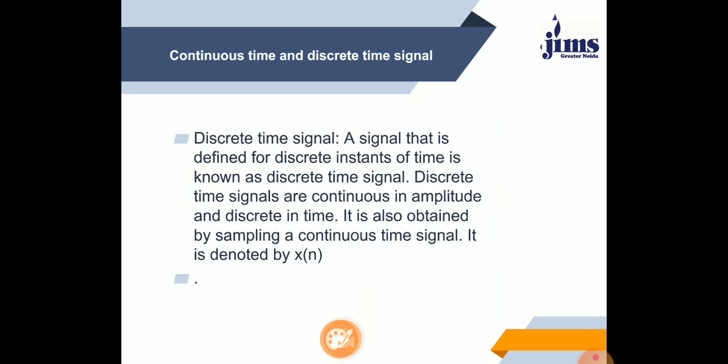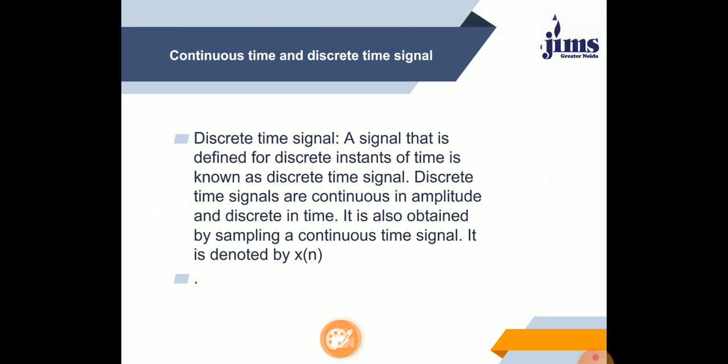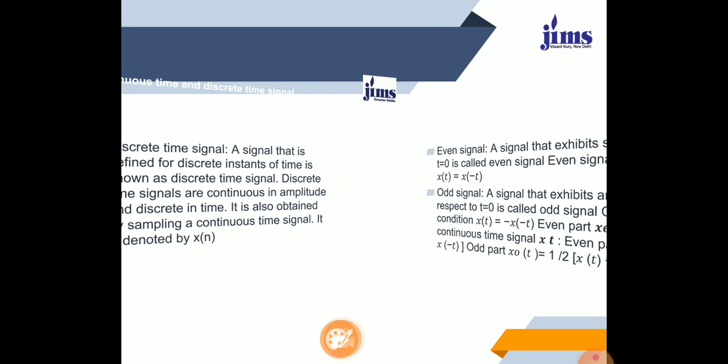A signal that is defined for discrete instants of time is known as a discrete time signal. It is obtained by sampling a continuous time signal and is denoted by x(n). So, continuous time signal is represented by x(t) and discrete time signal is represented by x(n).